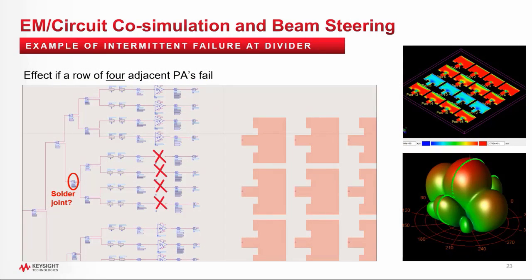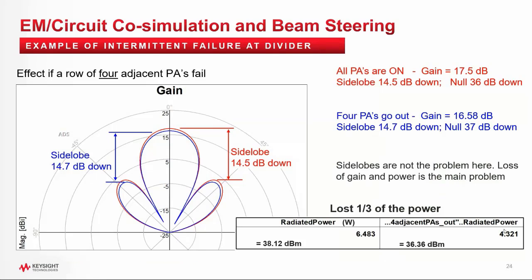You can see this in the near field EM plot on the top right. Notice the current density in the second row is very low due to the non-functional four PAs. The red profile is when all the PAs are working properly, and the blue profile is when the four PAs are open. Notice the main beam and the lobes degrade equally — the bore side of the main beam and the lobes both drop down in equal magnitude and in the same direction. But the radiated power has dropped from 6.48 watts down to 4.32 watts. One third of the power is lost due to this intermittent failure.